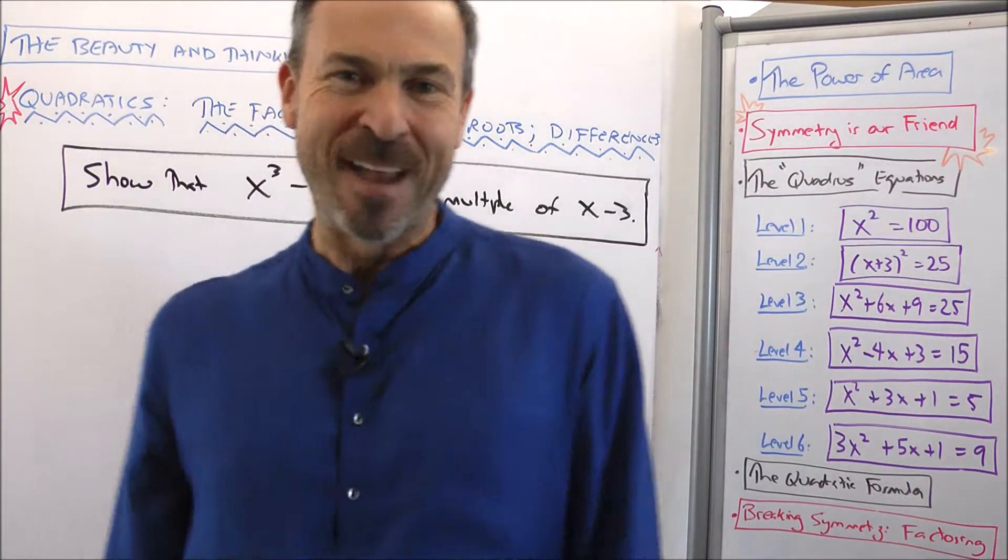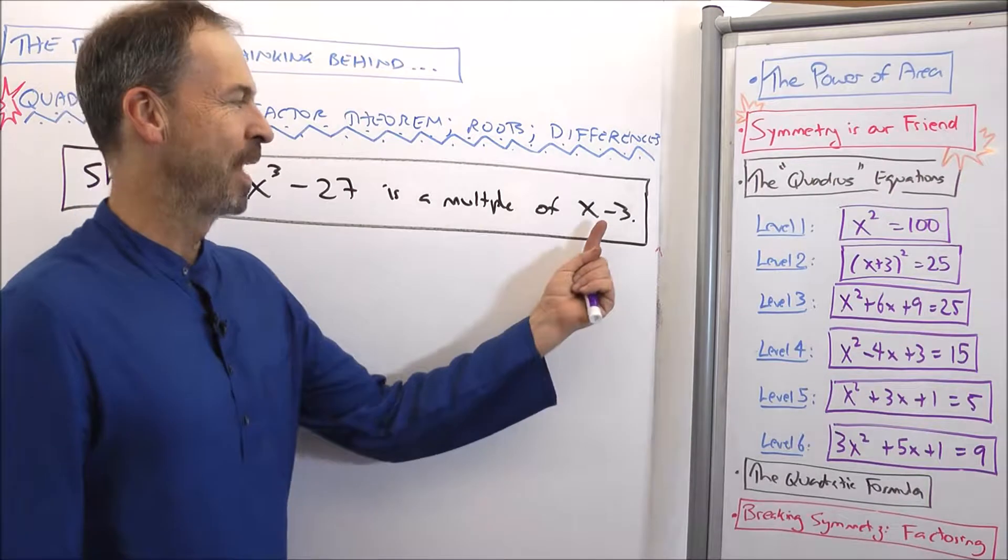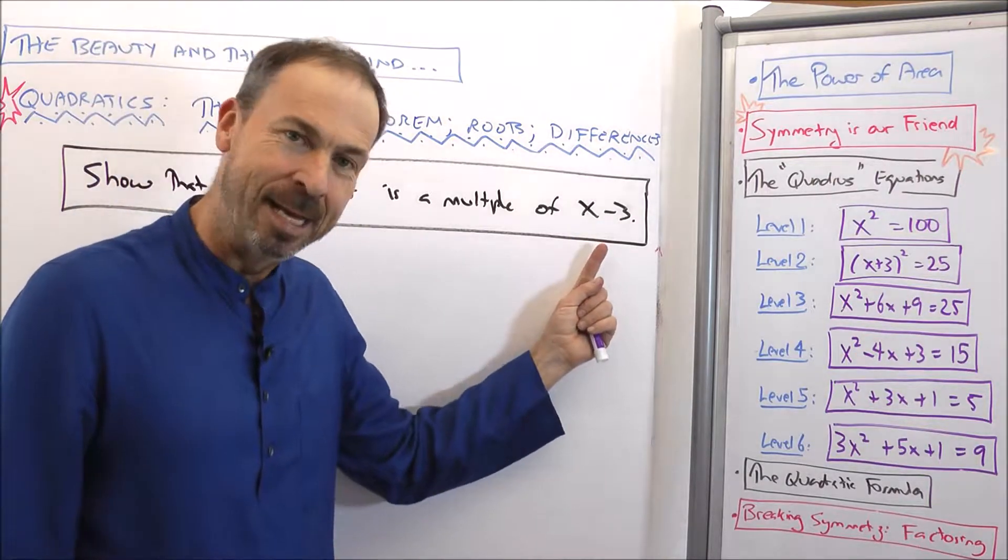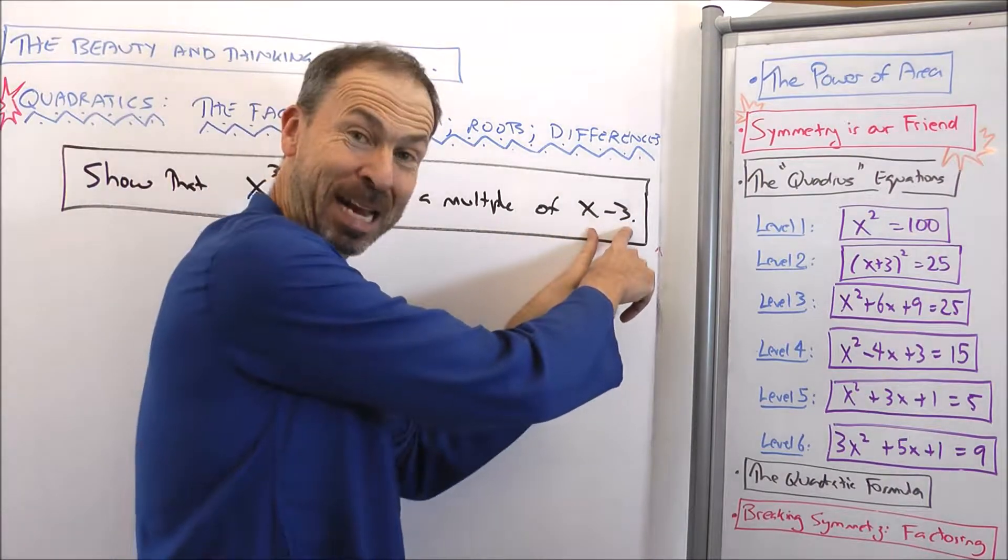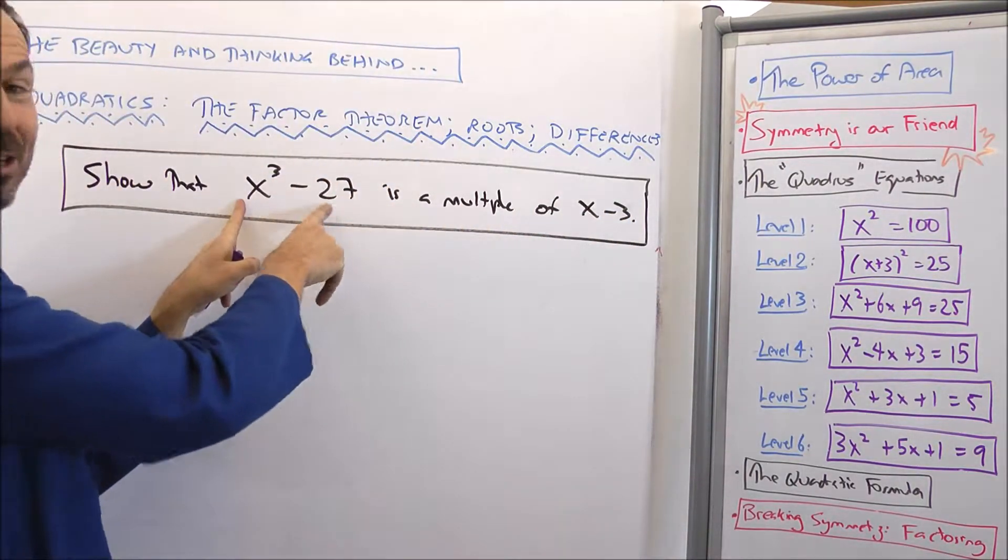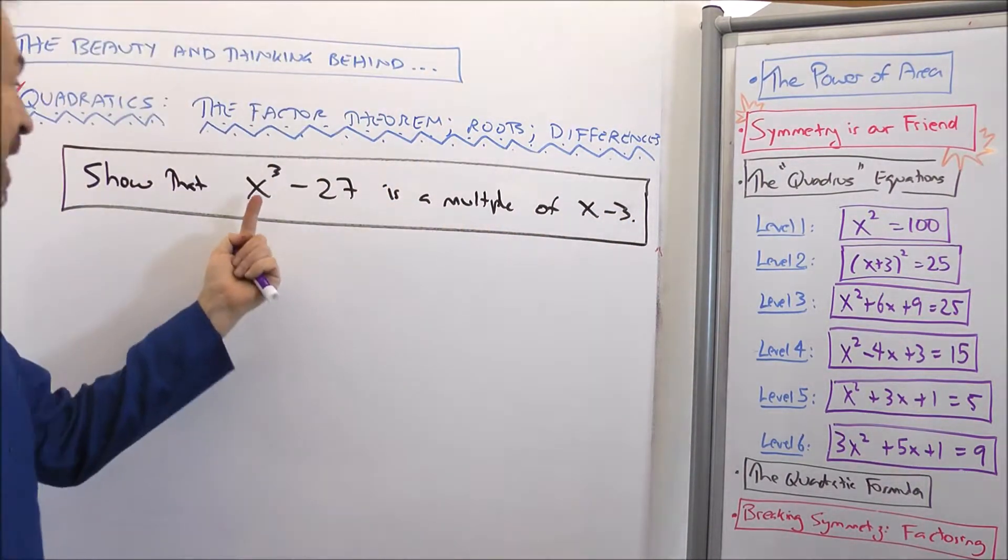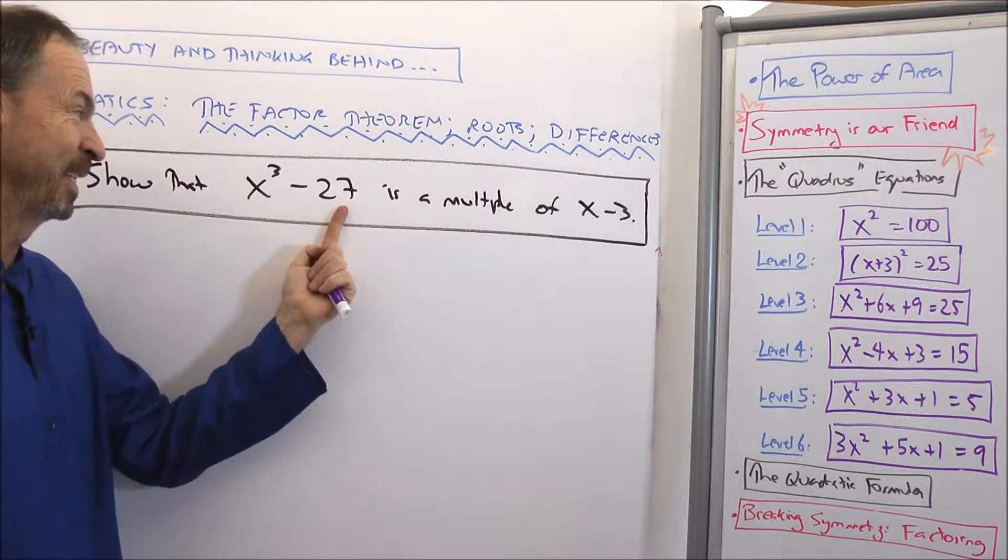Alright, alright, by the factor theorem, if we can show that x equals 3 makes this expression 0, then I know that x minus 3 would be a factor of this expression. In fact, putting in x equals 3 gives me 27 minus 27 is 0.